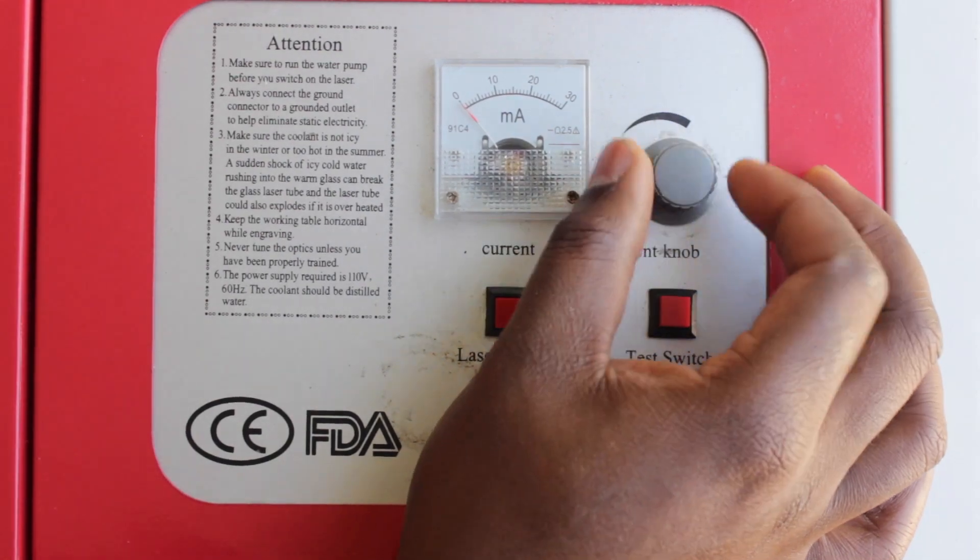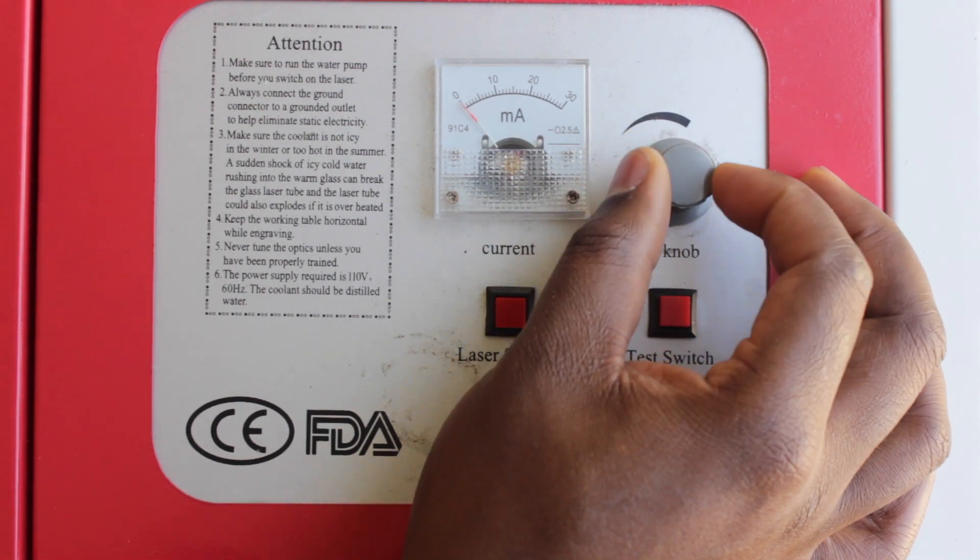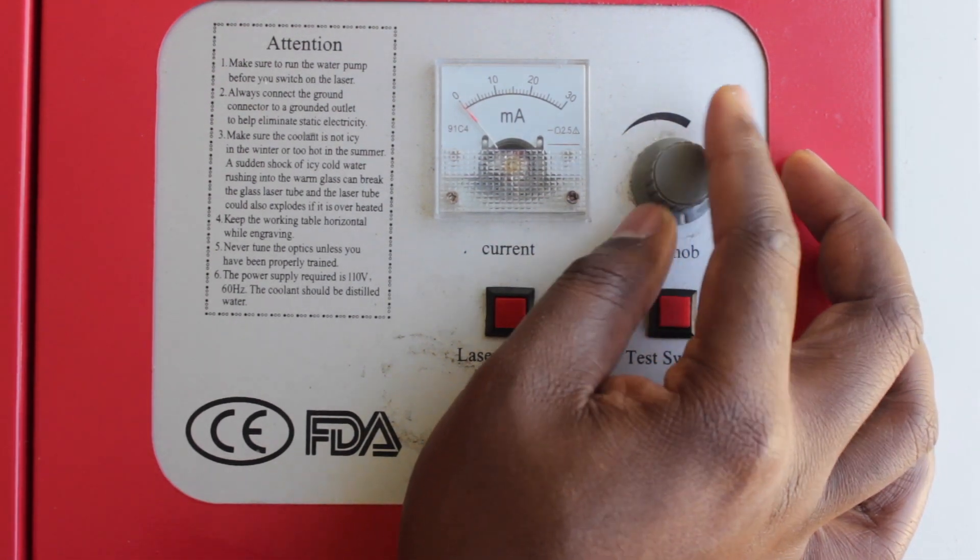First upgrade is the potentiometer. Some machines have a digital panel that makes fine adjustments to the laser's power output really easy. And some have an analog potentiometer with no concrete way of knowing your power levels.